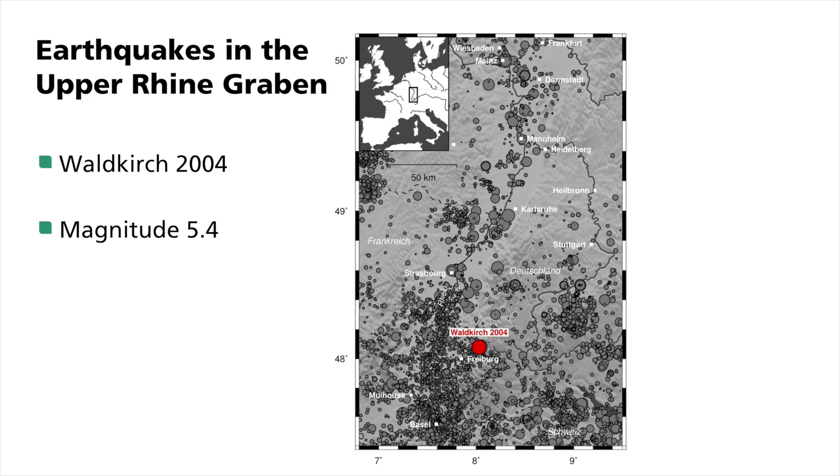Shown here is a map of the Upper Rhine Graben between Basel and Frankfurt. It is one of the active earthquake areas in Germany. The illustration shows all known quakes according to their magnitude. Large circles indicate large quakes with a magnitude of 5 to 6, while small circles indicate magnitudes of up to 1, which can only be measured using sensitive seismometers and cannot be felt.